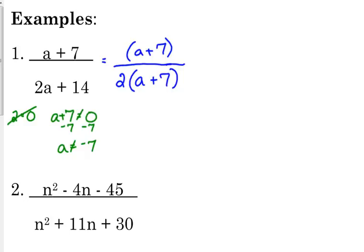We've figured out our excluded values. Now looking at our rational expression, (a + 7) shows up in both the numerator and denominator, so we cancel it. When we cancel what's in the numerator, it doesn't just disappear — we put a 1 in its place. Then we're left with 2 in the denominator. This expression equals one-half, except a cannot equal negative 7.